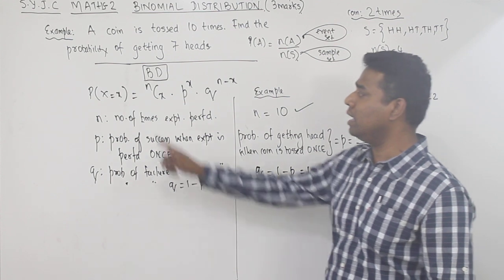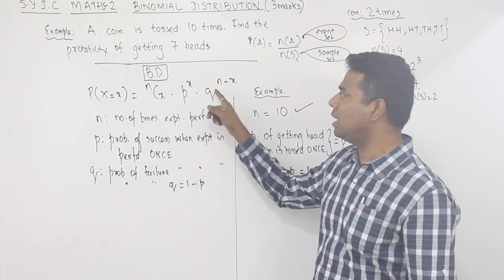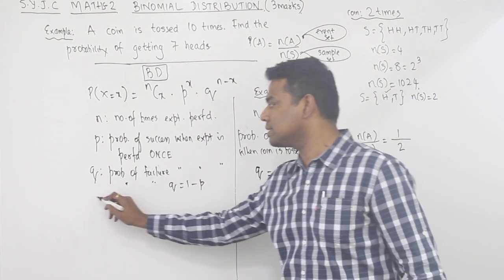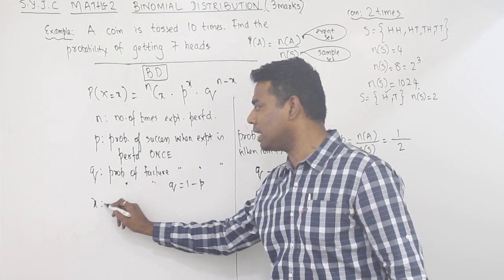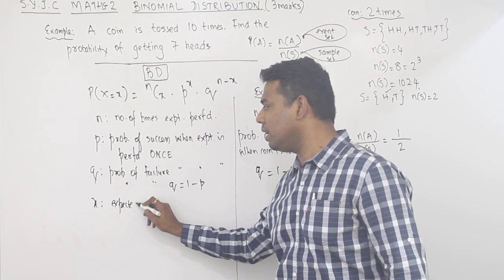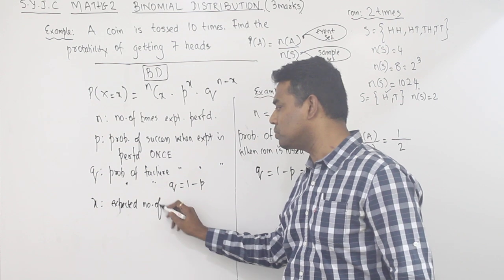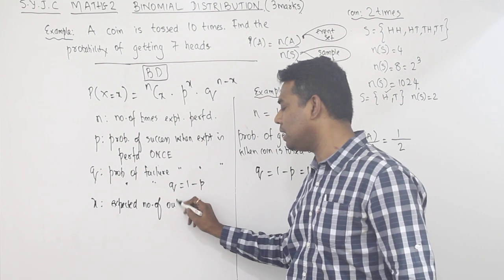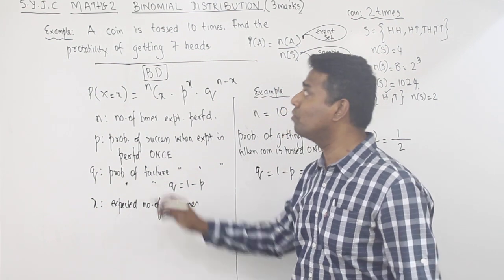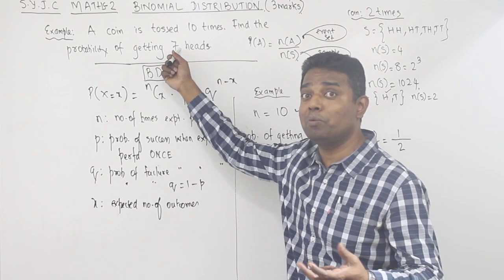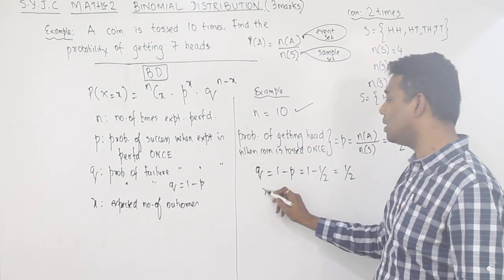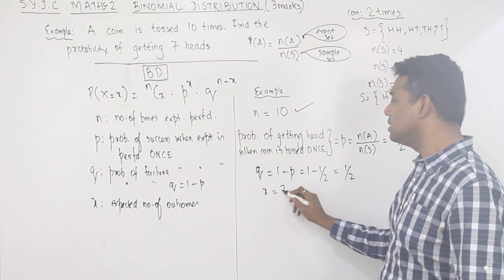What is still pending? X. What is X? X is the expected number of outcomes — finally what do you want? Getting 7 heads. So X = 7. All values are now obtained: n = 10, P = 1/2, Q = 1/2, X = 7.